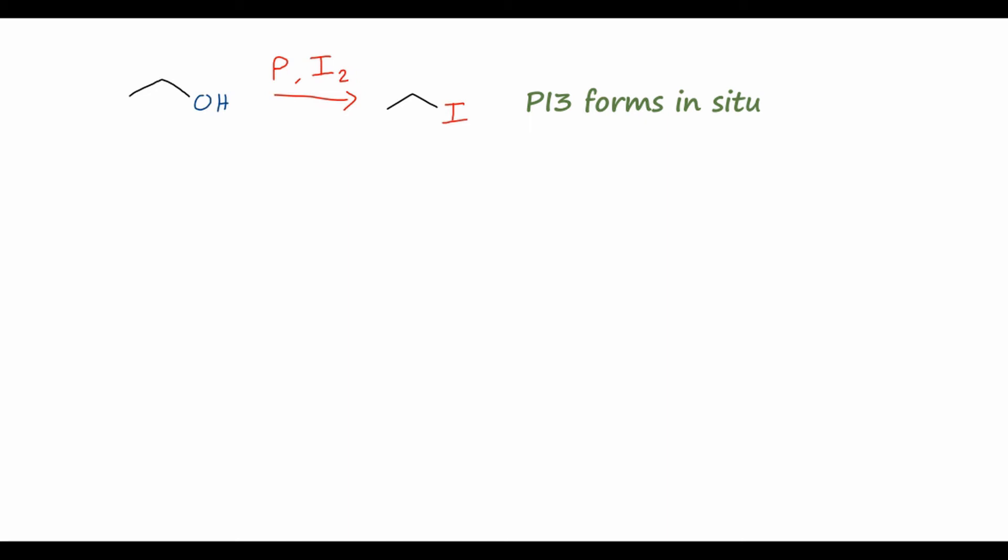So what about chlorination? Well, again, let's do another example alcohol, this time isopropyl alcohol. And you might think we would use just phosphorus trichloride, PCl3. But it turns out that PCl3 doesn't give very good yield,